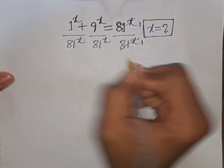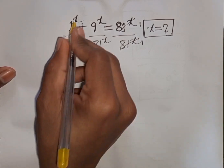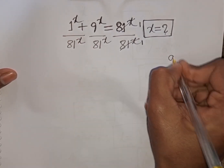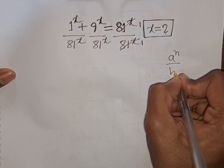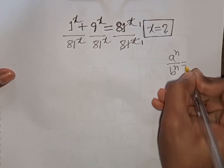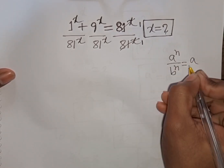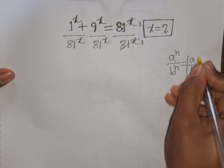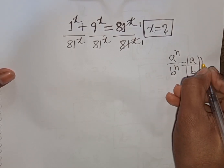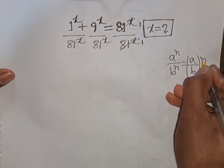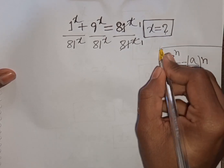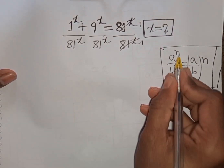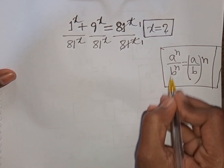Now we see x is the same power but with different bases. According to the formula, a^n / b^n = (a/b)^n — same power but different base.